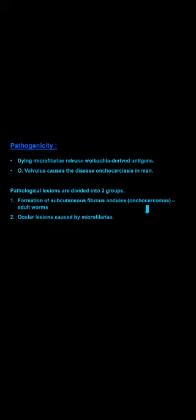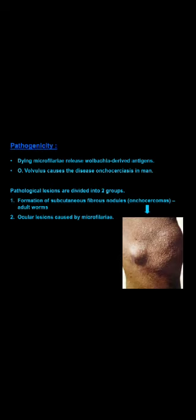Humans are infected by the bite of a black fly called Simulium, which deposits L3 larvae in the skin. They escape into the general circulation, become adults, and the male and female adults mate and release microfilariae into the general circulation to be picked up by the black fly. The larvae metamorphose from L1 to L3, with L3 again being infective to humans. They cause onchocerciasis — similar to calabar swellings — with onchosarcomas and ocular or subcutaneous tissue lesions.